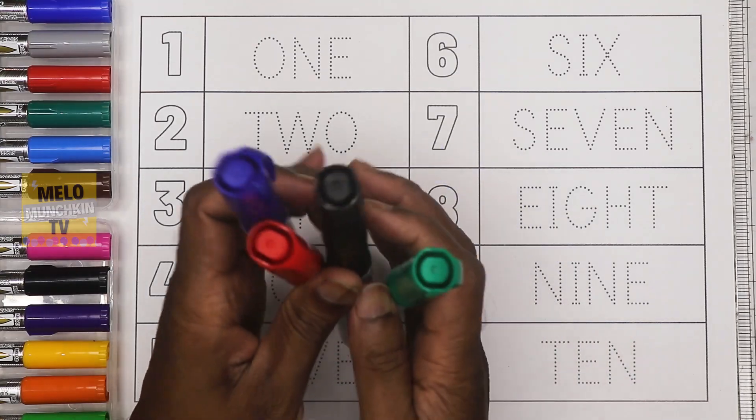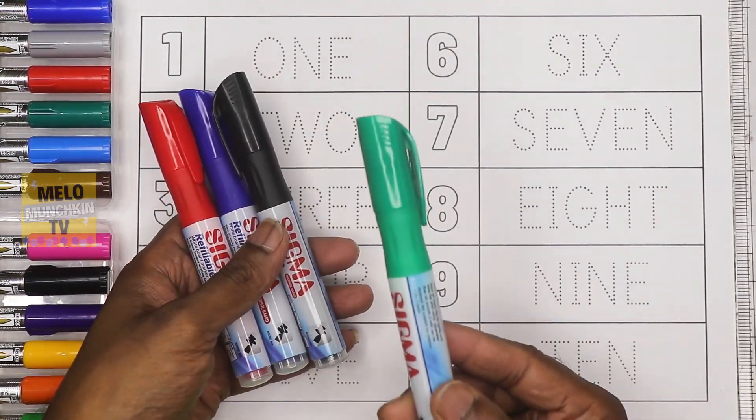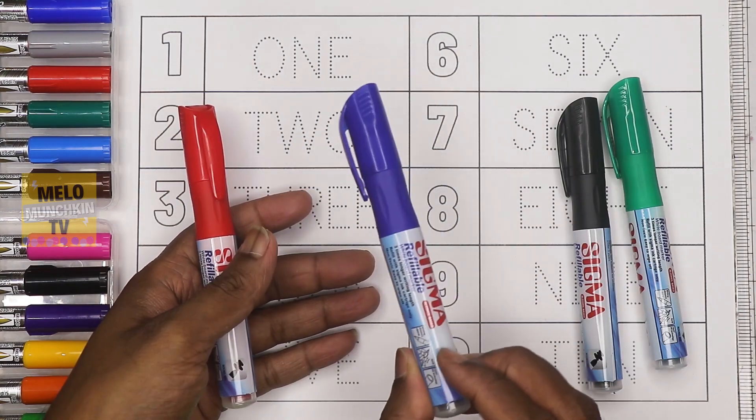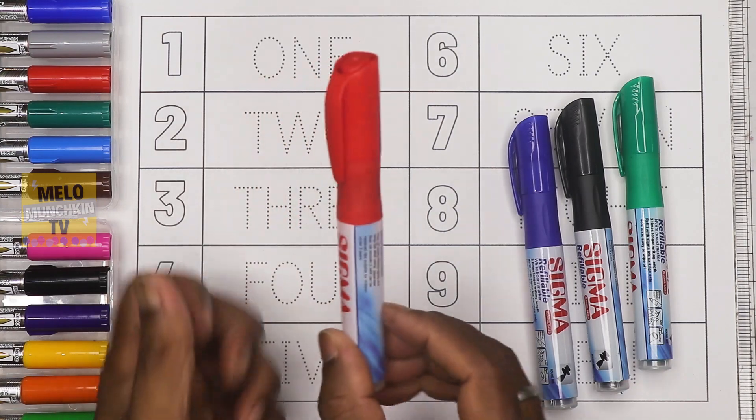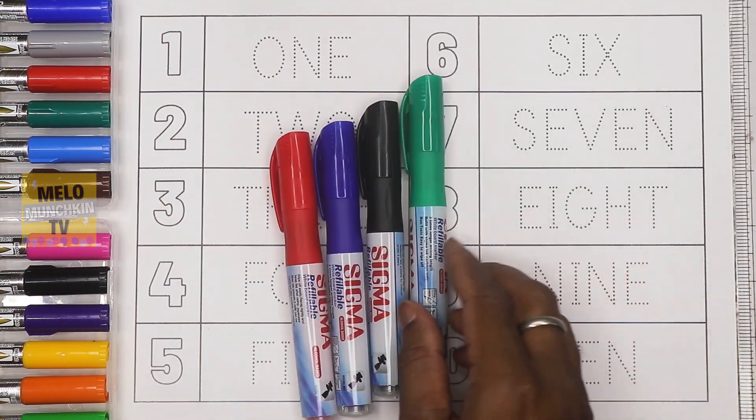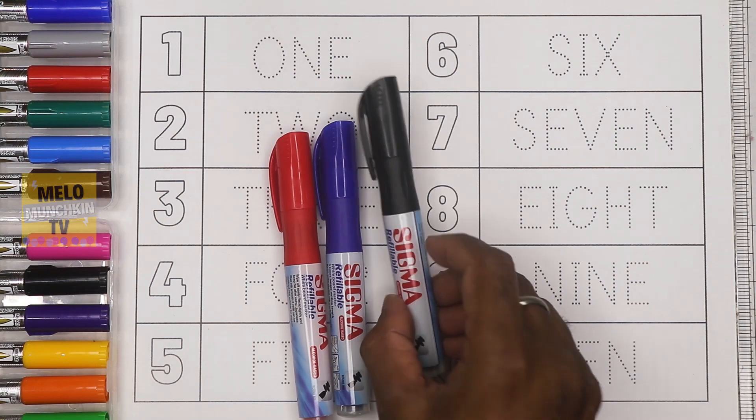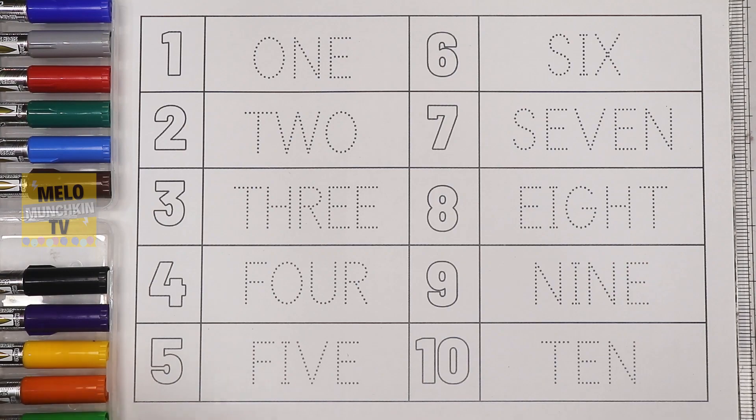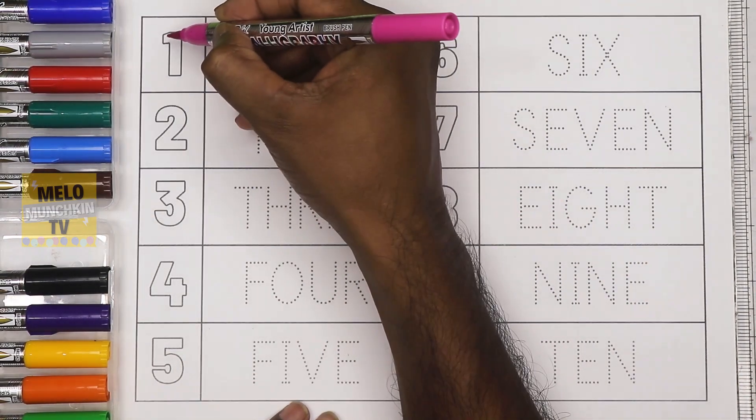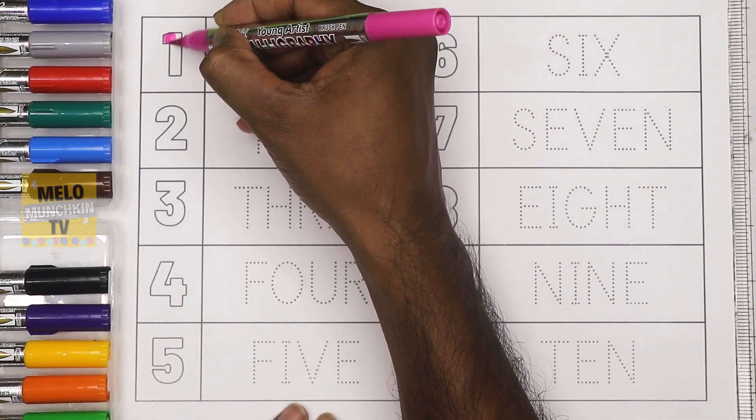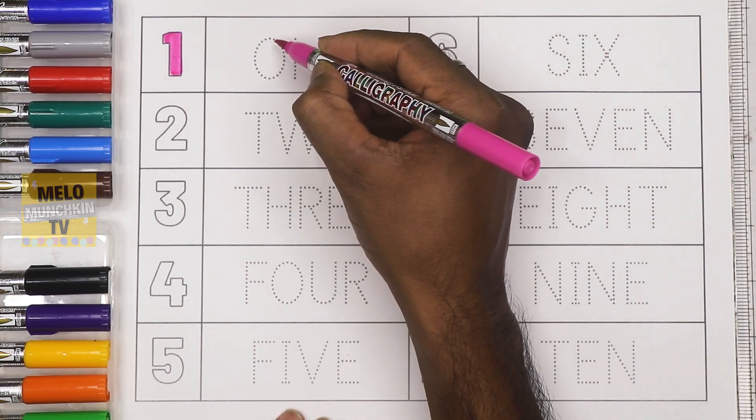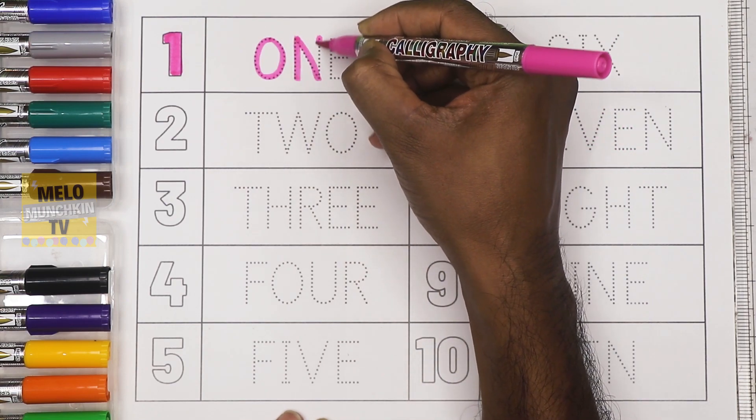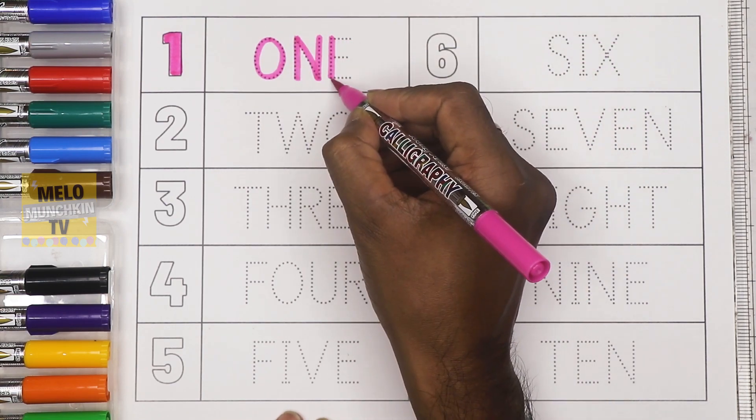See, we have four colors. This is green color, this is black color, this is blue color, and this one is red color. Green, black, blue, and red. Pink color. One. This is number one, O-N-E, one.